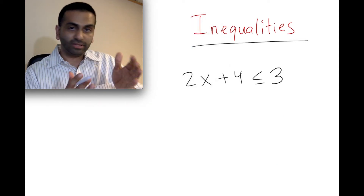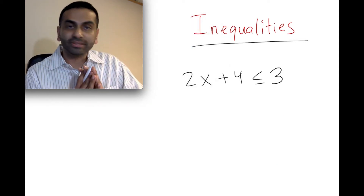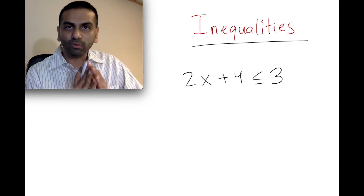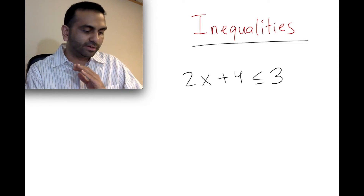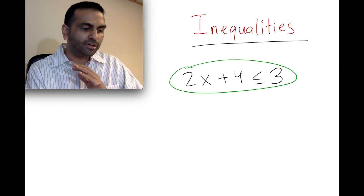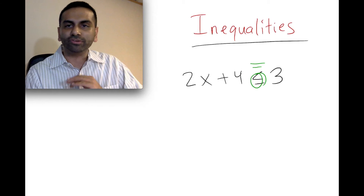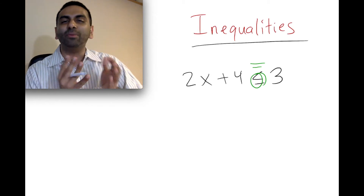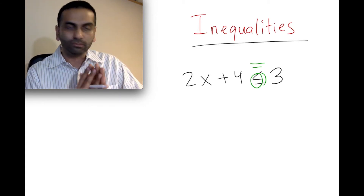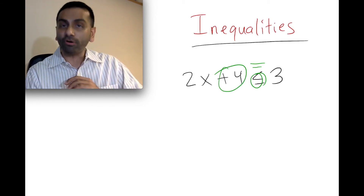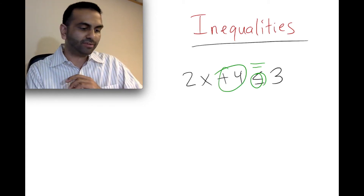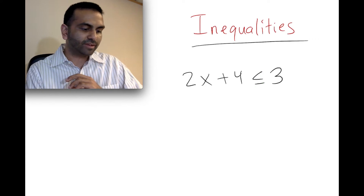So let's start doing this problem and see what we get. Looking at this, it's okay in your mind to replace the inequality sign with an equal sign. What would you do if that was an equal sign? You'd subtract four from both sides, so we're going to subtract four from both sides.